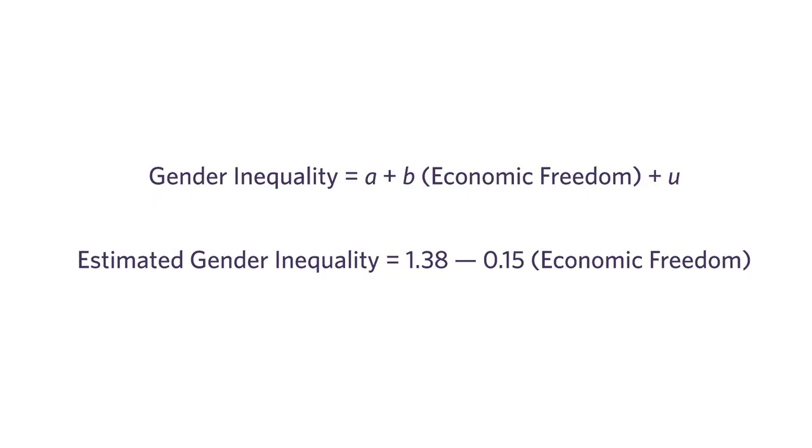Let's pause here because we've discussed three measures — these are the three key things we take away from a regression analysis. First is the p-value, which measures the significance of the relationship: high p-value means there's not a relationship here; low p-value means there appears to be one. Second is the value of B — the B parameter — which is the magnitude of the relationship: how big are changes in gender inequality associated with changes in economic freedom? Big or small, positive or negative? And third is the R-squared, which you could think of as the precision of the relationship.